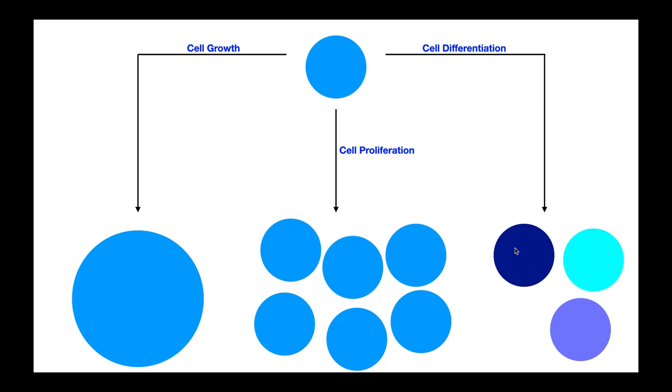And you can see the different cells here with different functions represented by different colors. So for example, maybe this cell differentiates into this dark blue cell that has a different function, or it can differentiate into the light blue cell, which has a different function than the dark blue cell, and so on and so forth. I think you get the point.